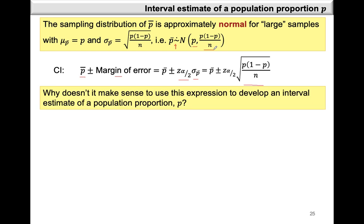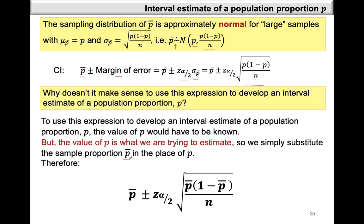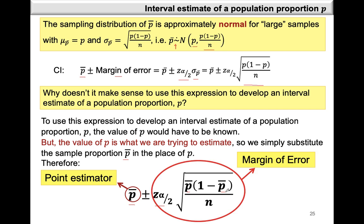Since we don't have the population proportion P, we cannot use it in the formula to calculate the standard error. So we use the best estimate, which is the sample proportion P-bar. We end up with our confidence interval as P-bar plus or minus Z alpha over 2 times the square root of P-bar times 1 minus P-bar divided by n. Here P-bar is our point estimator, and Z alpha over 2 times the square root of P-bar times 1 minus P-bar over n is the margin of error.